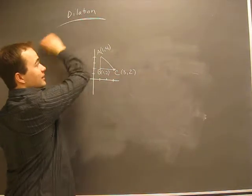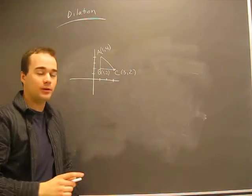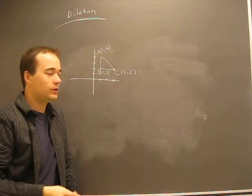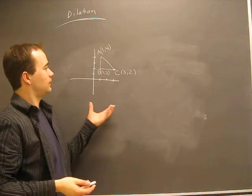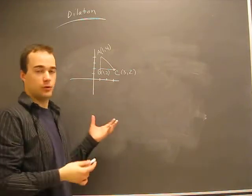All right, we're going to do dilation again, but now a graph example. Oh my goodness, what do we do to the points? Okay, so the question might say something like, here's a graph of a beautiful looking triangle.